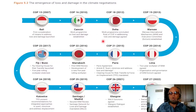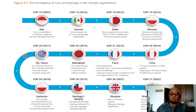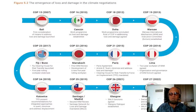At COP19 in 2013 in Warsaw, the Warsaw International Mechanism and Executive Committee were established to address loss and damage in a more formal way beyond just negotiations. At COP20 in 2014 in Lima, the two-year work plan of the Warsaw International Mechanism was agreed, and the organization and governance of the WIM ExCom were agreed.